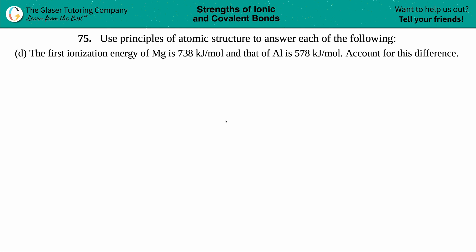Number 75: Use principles of atomic structure to answer each of the following. Part D says the first ionization energy of magnesium is 738 kilojoules per mole and that of aluminum is 578 kilojoules per mole. Account for this difference.